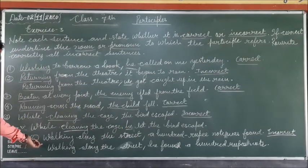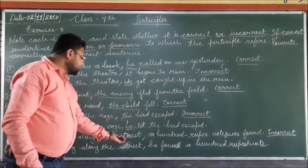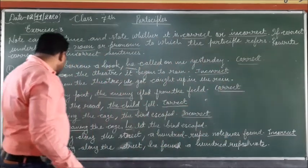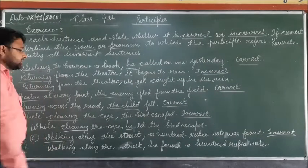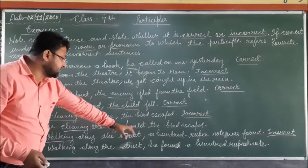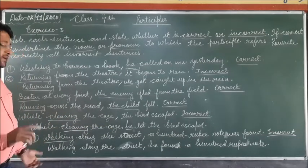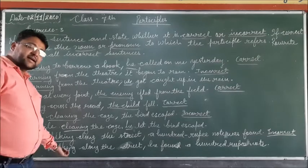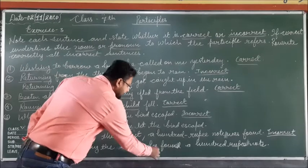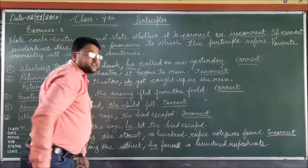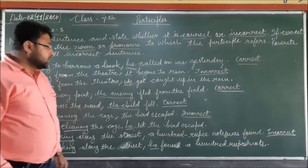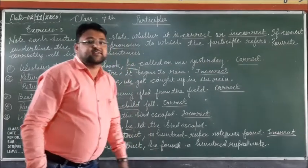Sixth sentence: 'Walking along the street, a hundred rupee note was found.' Here 'walking' is the participle, but there is no noun or pronoun to which it refers. So it is an incorrect sentence. The correct sentence will be: 'Walking along the street, he found a hundred rupee note.' Here 'he' is the pronoun to which 'walking' refers.